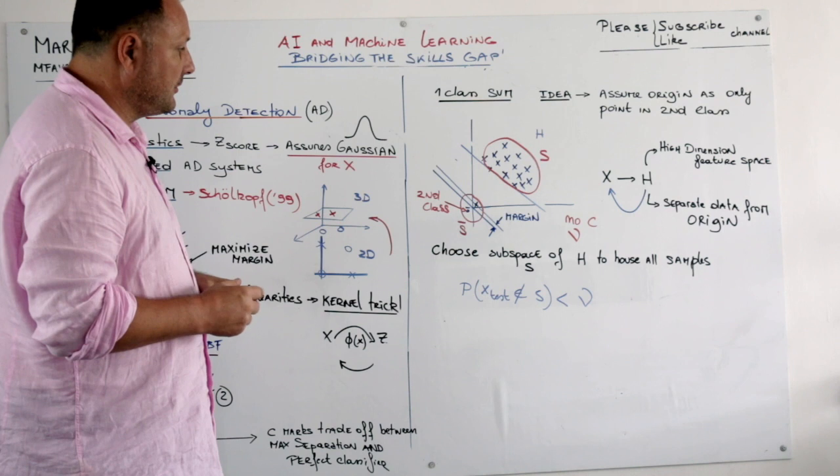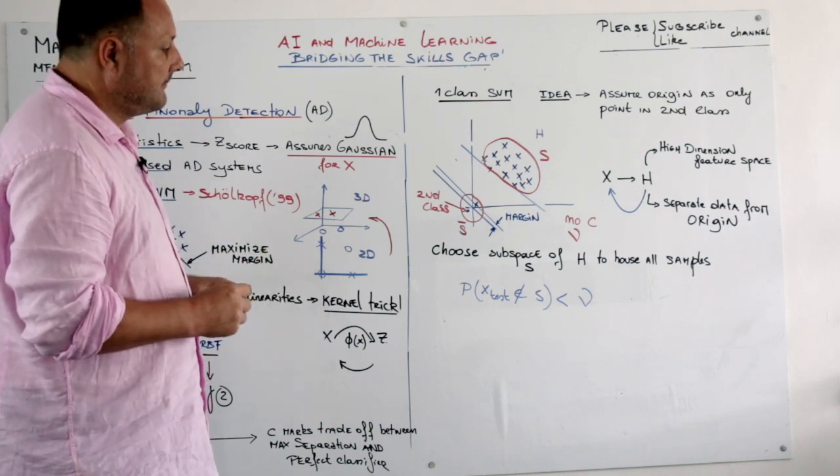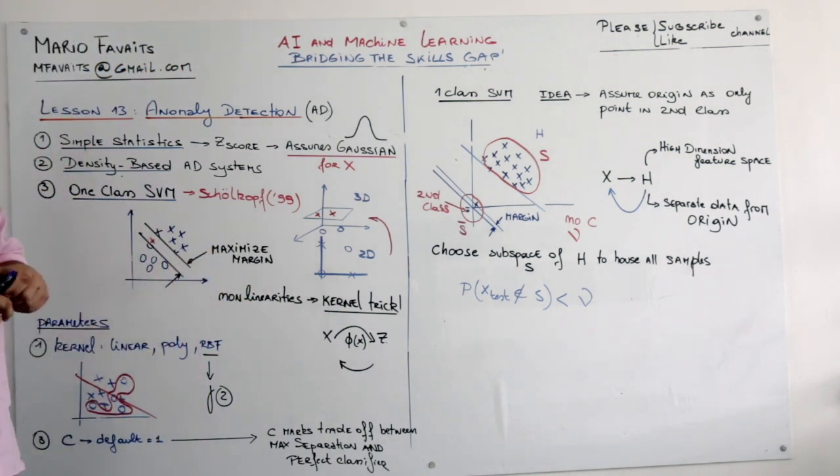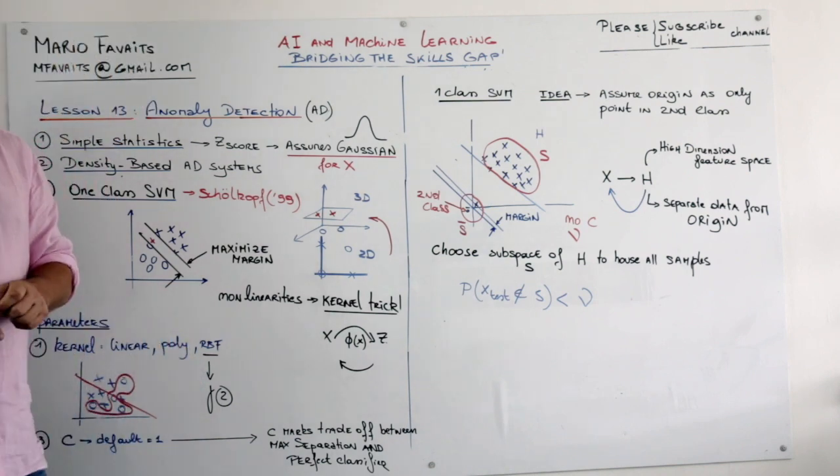Okay. So that's basically it. In our coding exercise we will use a linear or a polynomial kernel. Because I already tried with RBF and it takes a while.